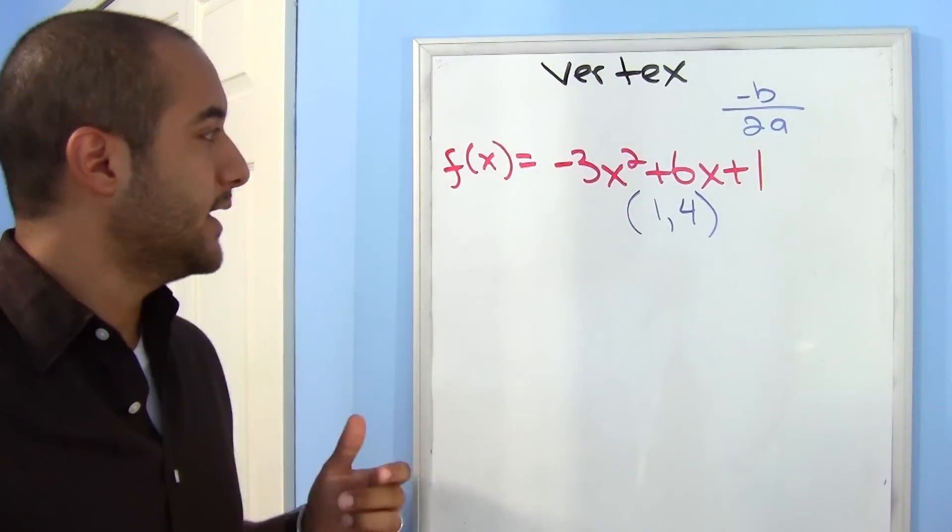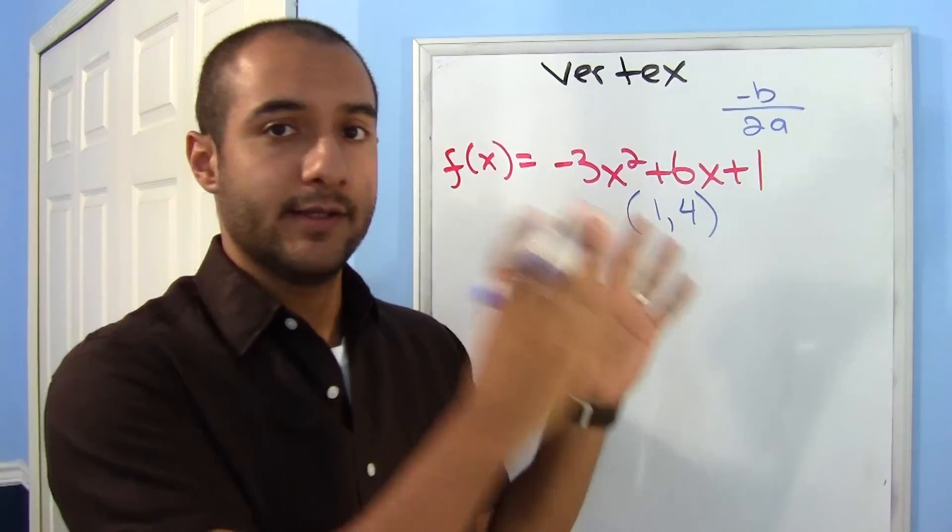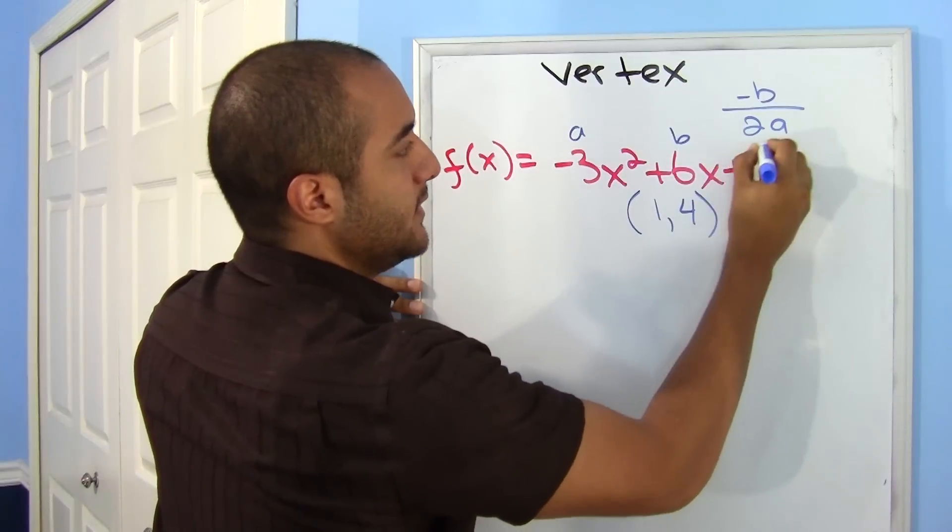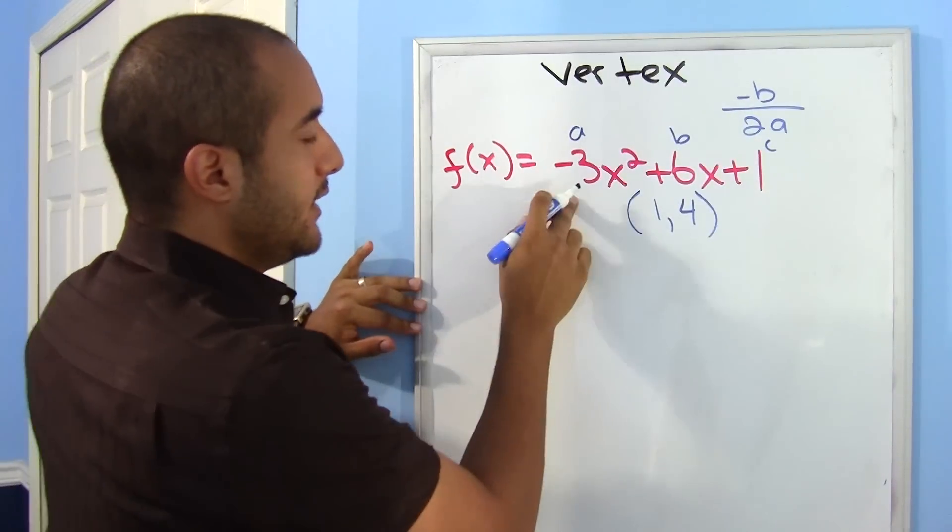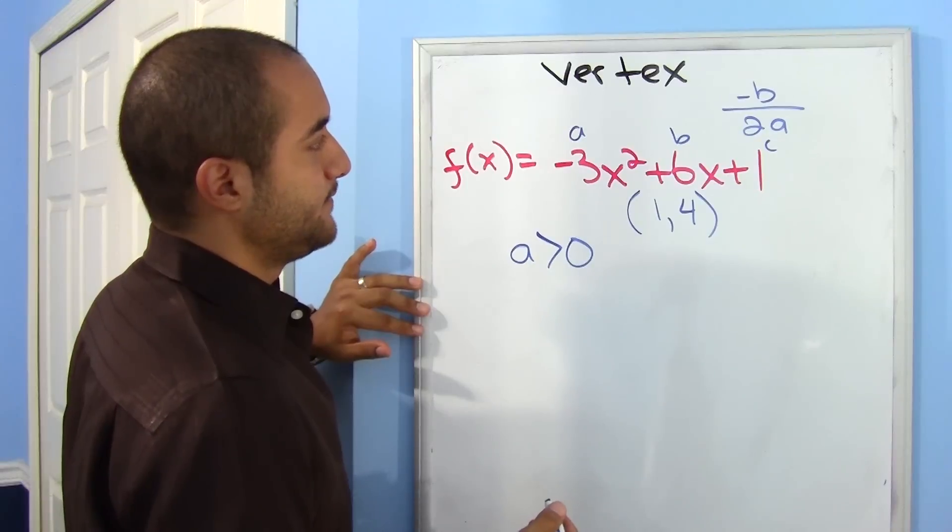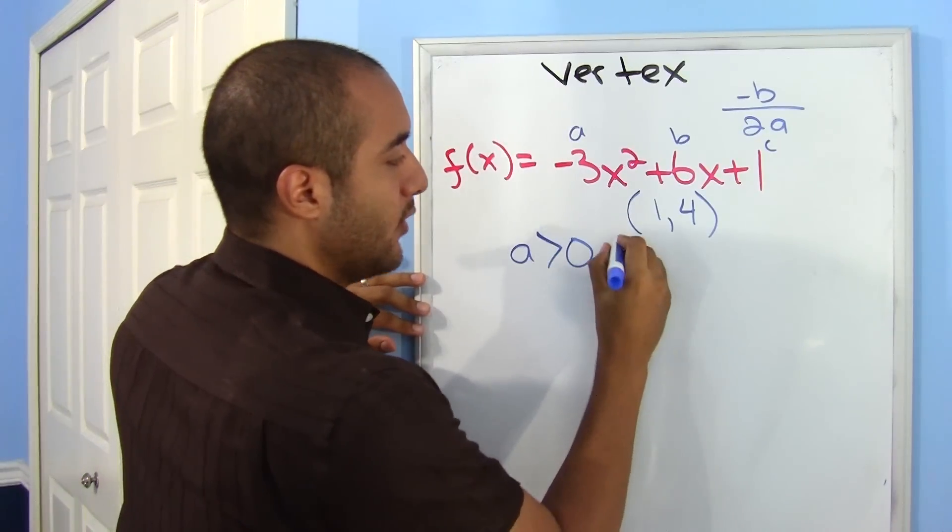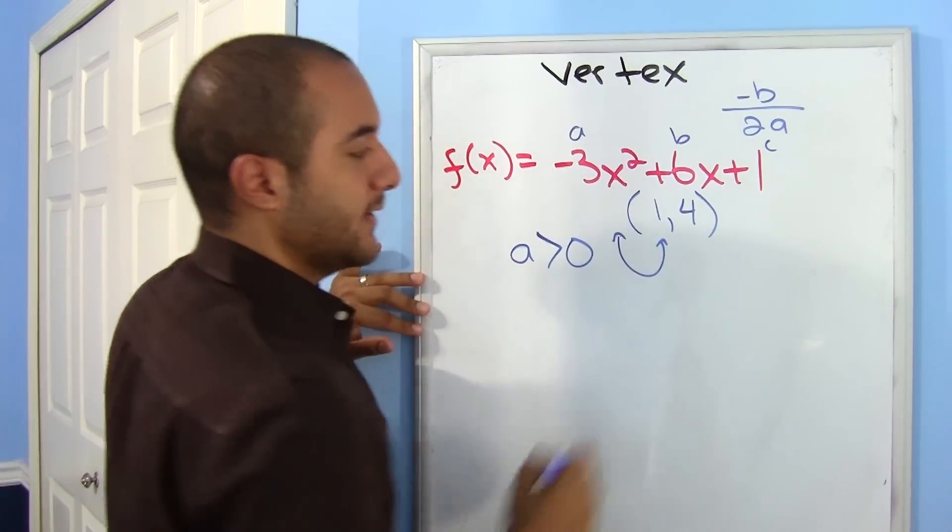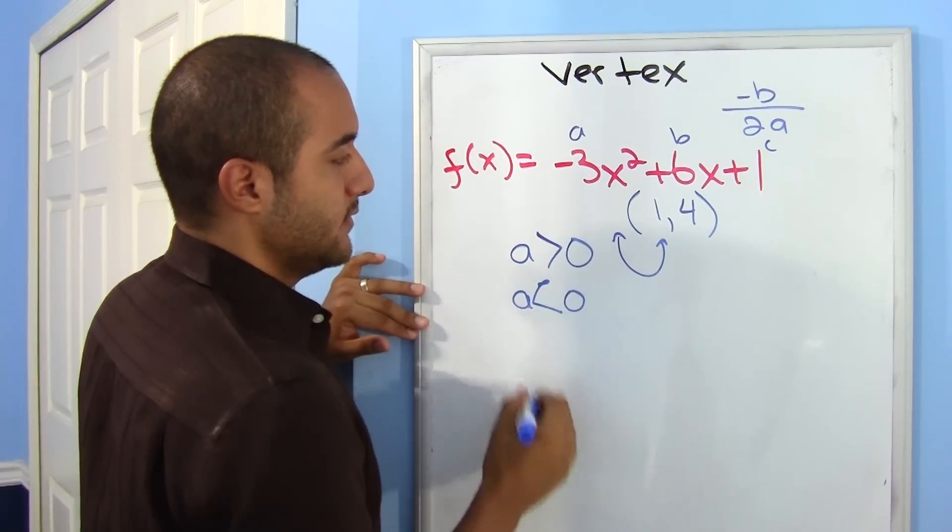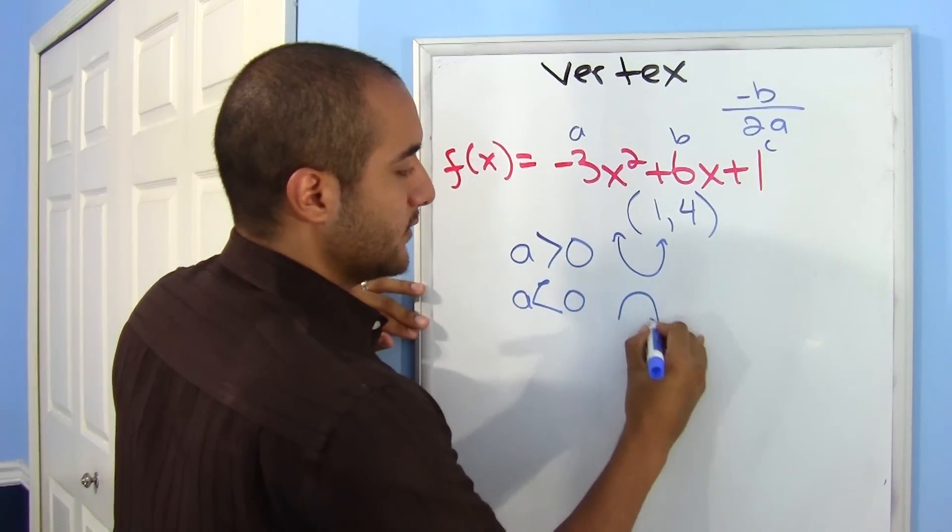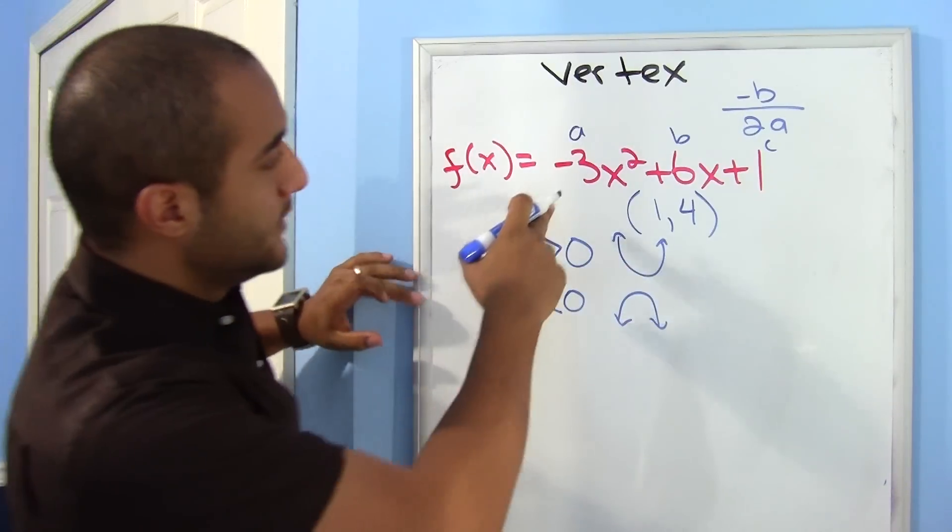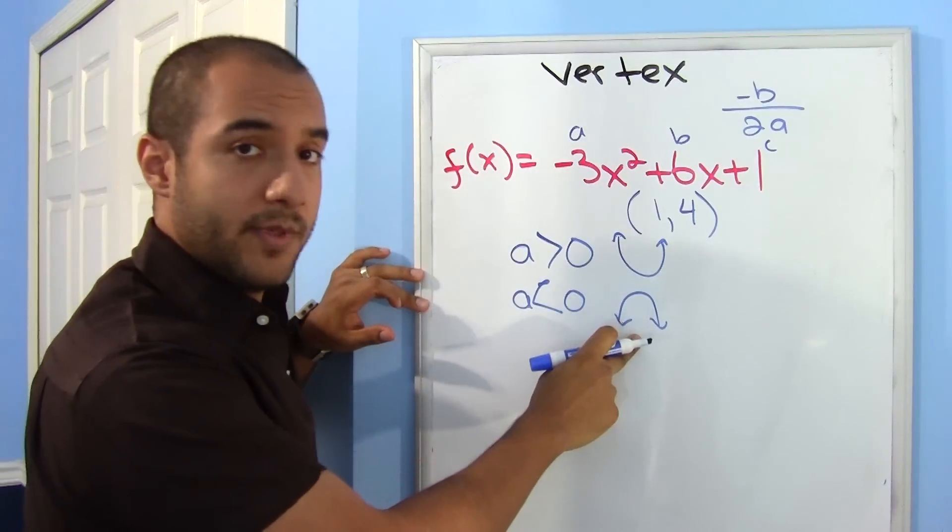Alright, looking at one of the examples that I gave you, we can further analyze what we have. If we look at our a, where that was a, b, and this is our c. If we look at our a, if a is greater than 0, so if it's positive, then our parabola is going to open up. It's going to look like that. If our a is less than 0, it's going to open downward. So that already lets us know if it's going to open up or down. And looking at this one, we know that this one's going to open down.